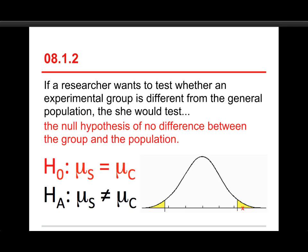And here's what it looks like. What we have is the null hypothesis in red. Note that it's written in Greek letters because it's about population means, and what it says here is that the population mean for the sample is equal to the population mean for the comparison group. The alternative hypothesis is simply that they are not equal.